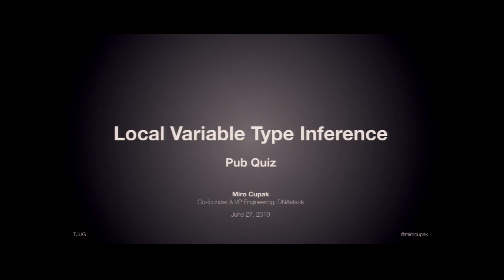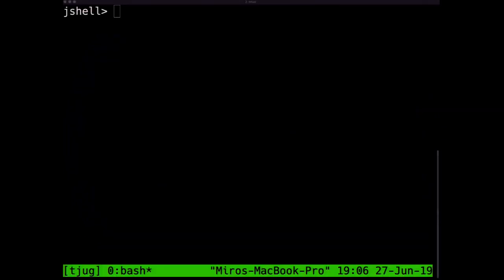I like learning through examples, and I'm going to write many of them throughout this talk. I'm going to write all the examples in JShell, which is Java's implementation of a REPL that we've had since version 9. If you haven't seen JShell before, don't worry about it too much. It's pretty easy to figure out, and if you have used the REPL in a different technology stack, it's basically the same thing. I think that's enough for slides — let's jump straight to the code.